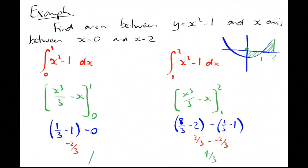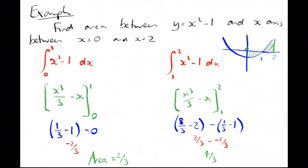So the area under the curve is going to be 2 thirds — we make the negative value positive because it represents an area. So it's 2 thirds plus 4 thirds, giving a total area of 2.